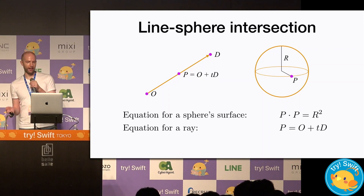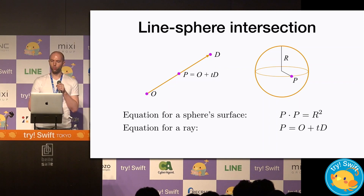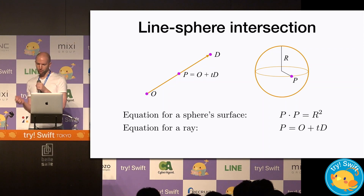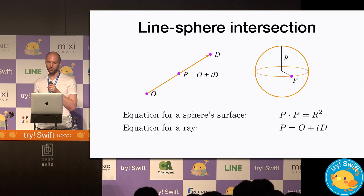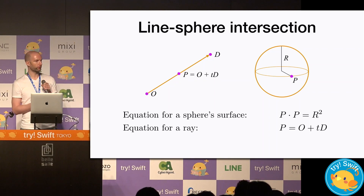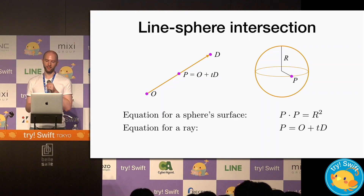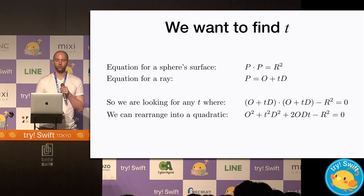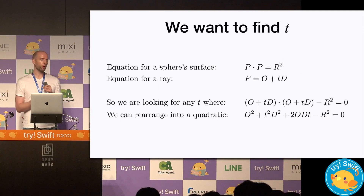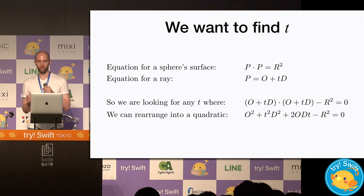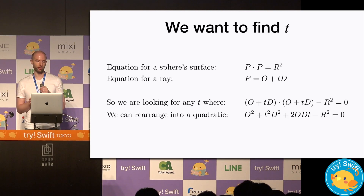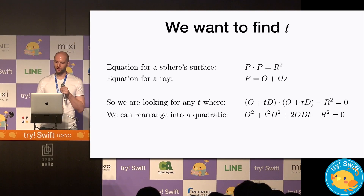That requires coming up with an analytic solution to two equations: one for the point on a sphere, and one for a parametric ray. If we take the dot product of a point on the surface of a sphere p, it will be equal to its radius squared, or r squared. A parametric ray is just an origin point o, a direction vector d, and a t parameter that tells us how far we travel along the ray. We want to find t — for what t does our ray hit the surface of the sphere? If we substitute p in each equation, the dot product of o plus td minus r squared should equal zero. Working through the vector algebra, we can arrange this into a quadratic.